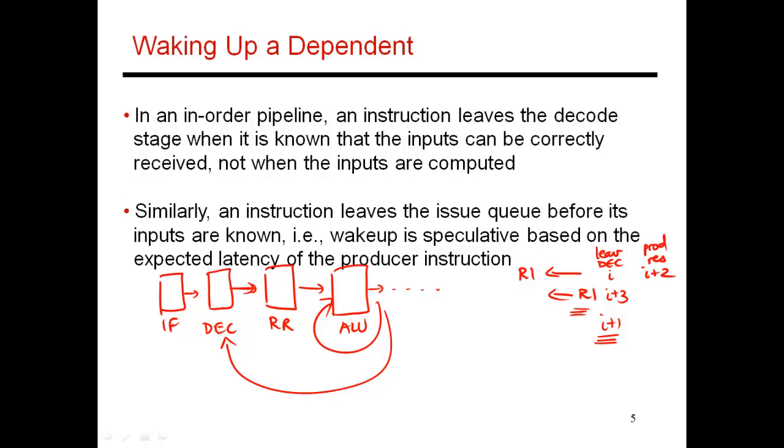A similar concept is also used in this out-of-order pipeline. I have an issue queue, and when somebody leaves the issue queue, they may have to read something from the register file. They then proceed to the ALU stage. When a result is produced, it gets written into the register, and I also broadcast the availability of that value. This broadcast need not happen after the value is produced in the ALU. It can happen sooner.